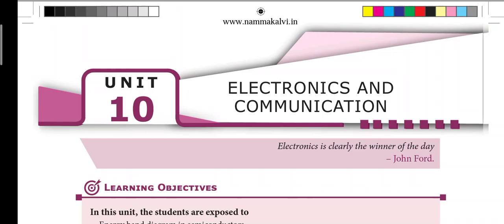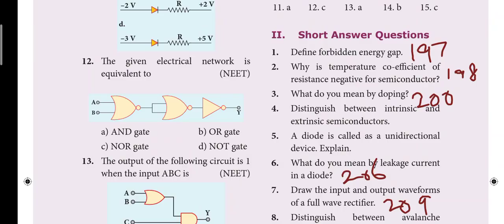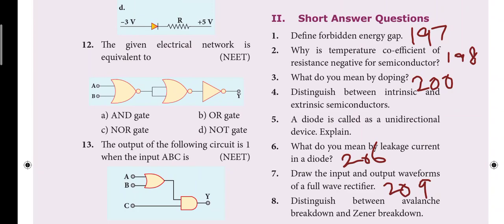First, page numbers. First question: define forbidden energy gap, page number 197. Second question: why is temperature coefficient of resistance negative for semiconductor, 198. Third question: what do you mean by doping, 200. Next, distinguish between intrinsic and extrinsic semiconductor.